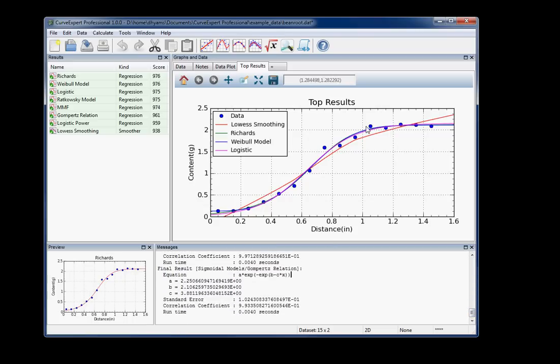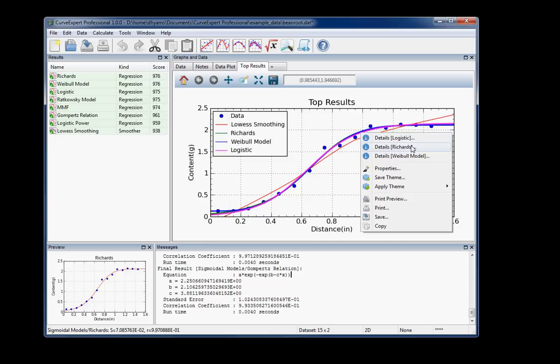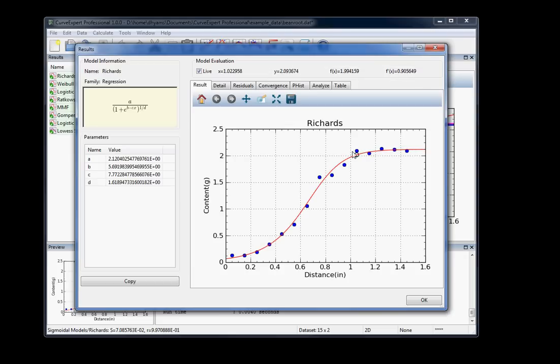And you can see the top results plot has become more populated as we point to each curve. It'll highlight, and you can do various things to those. If you double-click those, you can change the line styles and things like that. If you right-click and select Details, you can basically drill down a bit and show the details for that particular result.